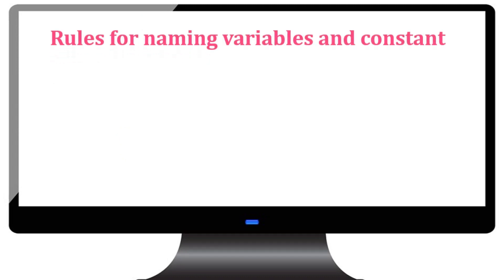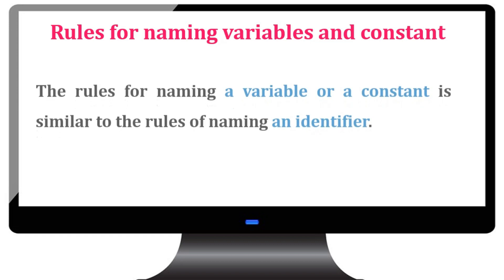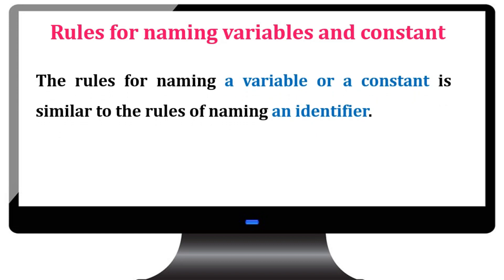Rules for naming variables and constants. The rules for naming a variable or a constant is similar to the rules of naming an identifier which we have seen in the previous video. Let us have a quick recap of it.